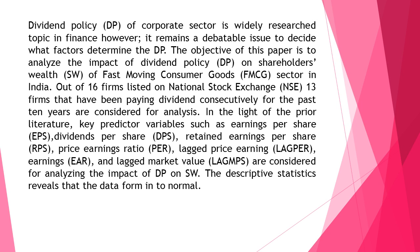In the light of prior literature, key predictor variables such as earnings per share (EPS), dividends per share (DPS), retained earnings per share (RPS), price earnings ratio (PER), lagged price earnings (Lag PER), earnings (ER), and lagged market value (Lag MPS) are considered for analyzing the impact of DP on SW. Descriptive statistics reveal that the data are normally distributed.